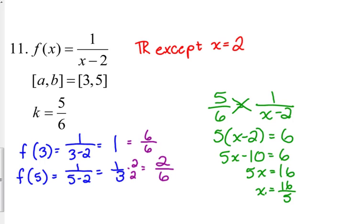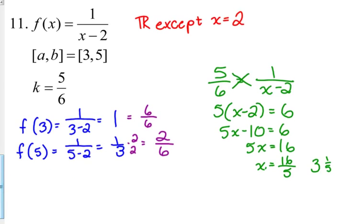Which is in our interval. How do I know that? 5 goes into 16 three times with one left over, so we've got 3 and one-fifth, 3.2, whatever it may be. It's greater than 3, so we are good. Our C value is 16 over 5. Leave it in fractional form. I only did the 3 and one-fifth to make sure that it was in my interval.